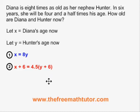Now that we have made the two equations, we can use substitution, elimination, or comparison to solve. I'm going to use substitution. The two equations are already set up very well because x is isolated in one of the equations. Since x equals 8y in the blue equation, the x in the red equation must also equal 8y, and I can substitute 8y for that x.